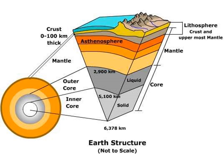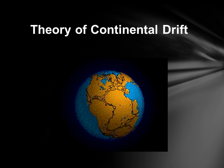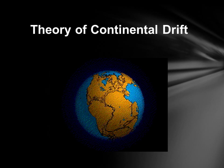The outermost part of the mantle is solid, and that along with the solid crust make up what we call the lithosphere. The lithosphere is what makes up our tectonic plates — sometimes called lithospheric plates — and I'm going to talk about those in a little bit.